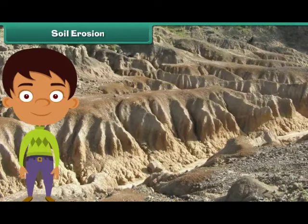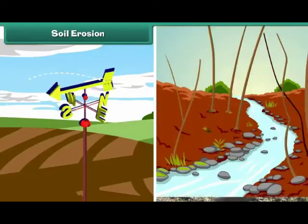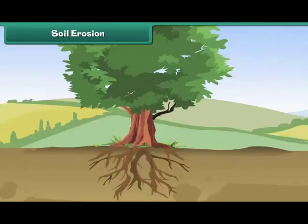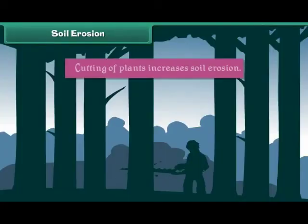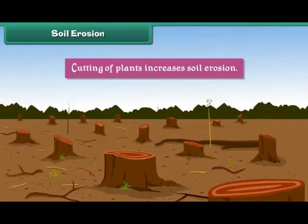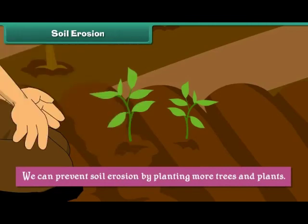Soil Erosion. Soil erosion is the removal and transfer of soil by wind and water. Roots of plants hold the soil and prevent soil erosion. Cutting of plants increases soil erosion. We can prevent soil erosion by planting more trees and plants.